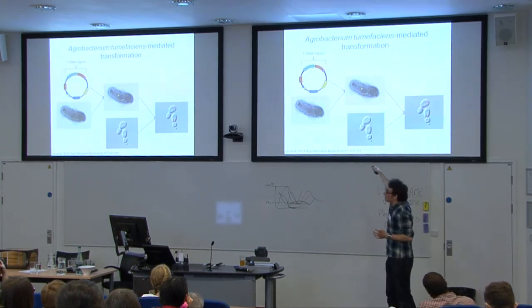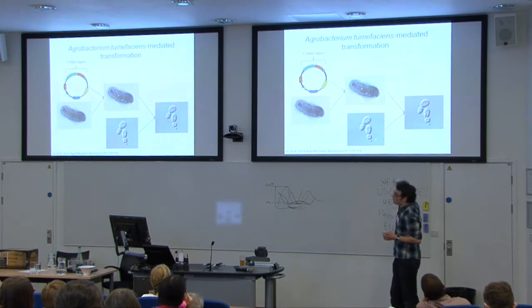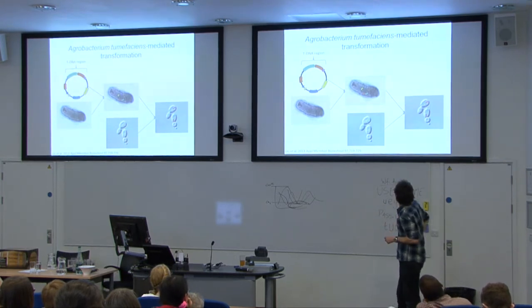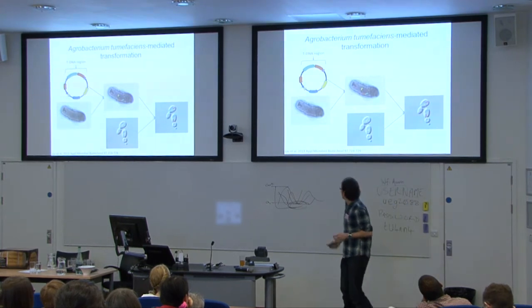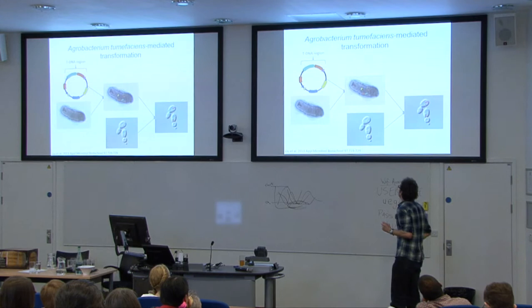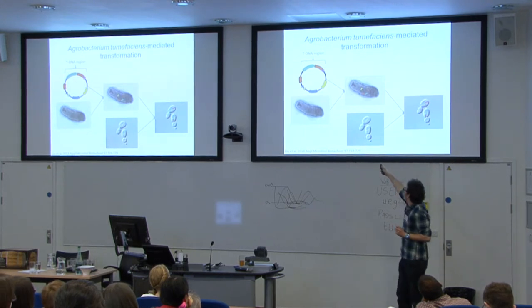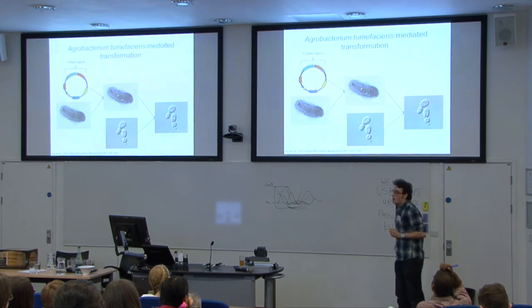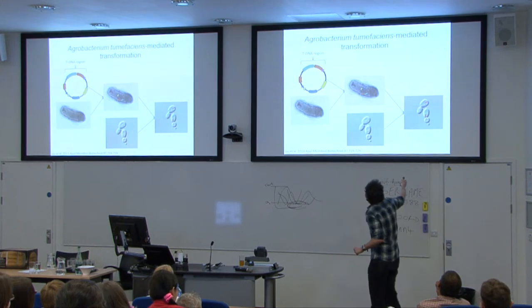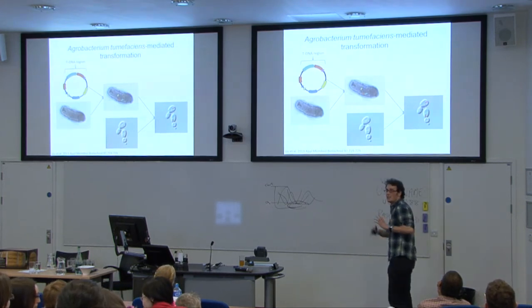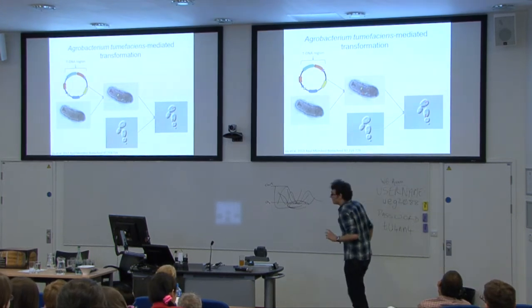You transform this plasmid into Agrobacterium. You then mix your Agrobacterium and yeast under conditions that mimic plant wounding. Then, if all goes to plan, the Agrobacterium passes its T-DNA region to the yeast, and the yeast integrates the T-DNA into the genome.